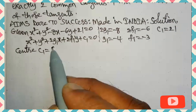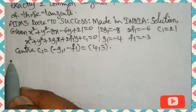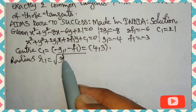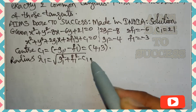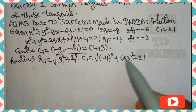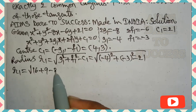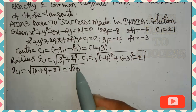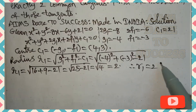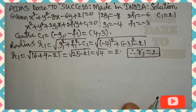The center formula is (−g, −f). So center C₁ = (−g₁, −f₁) = (4, 3). Radius r₁ = √(g₁² + f₁² − c₁) = √((−4)² + (−3)² − 21) = √(16 + 9 − 21) = √4 = 2. So radius r₁ = 2.